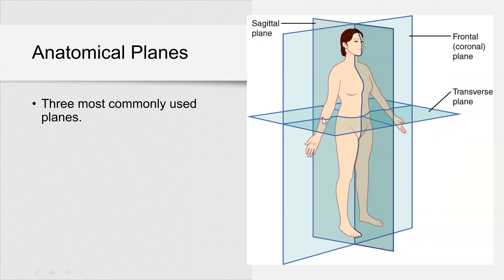We use imaginary planes to divide the body into sections. The three most commonly used planes: when it's right in the middle, it's called mid-sagittal; when it's off midline, it's parasagittal. Then we have the frontal or coronal plane, and the transverse plane. The transverse plane divides your body into superior and inferior parts. The sagittal plane divides your body into right and left, and the coronal plane divides it into anterior and posterior.